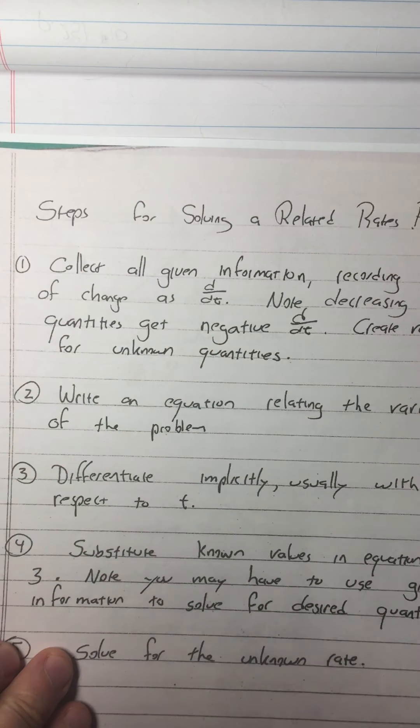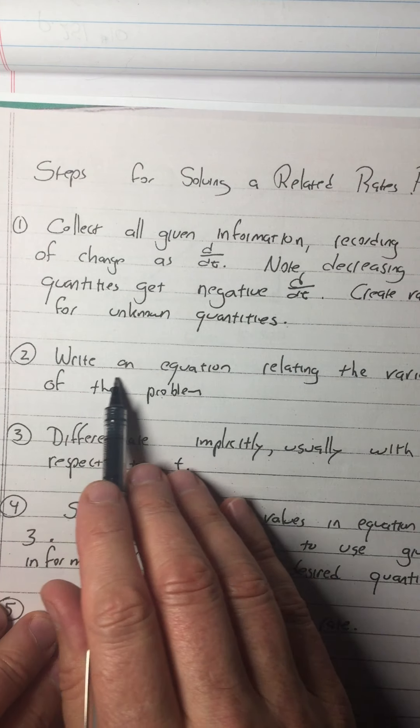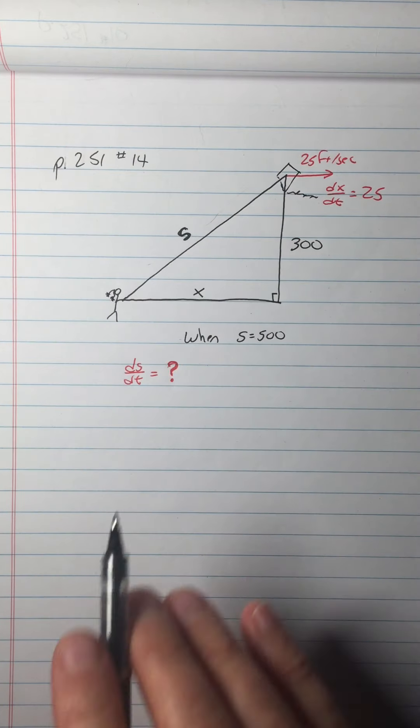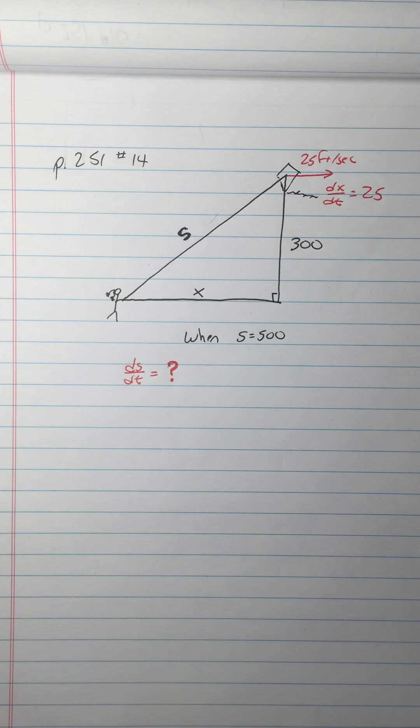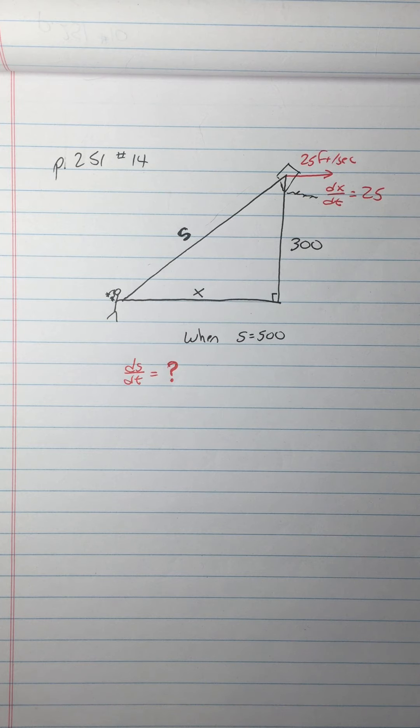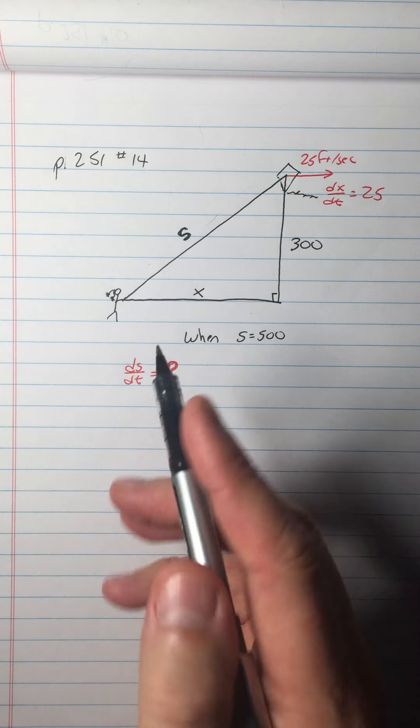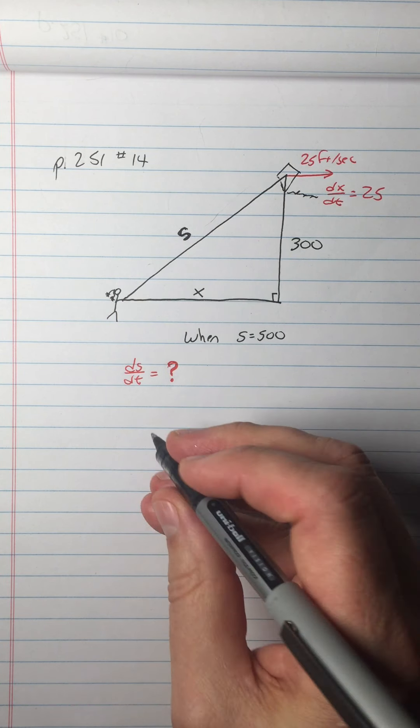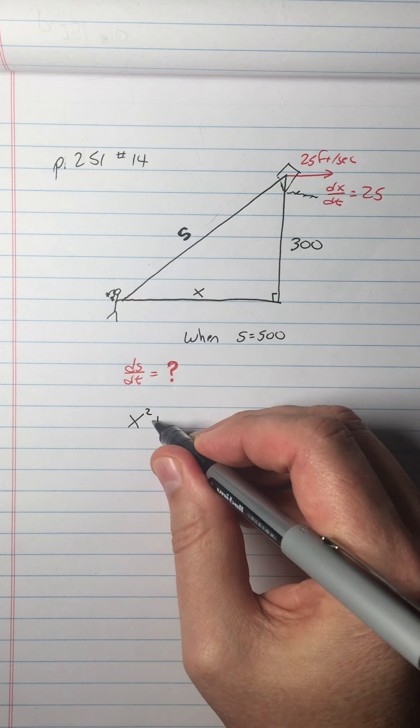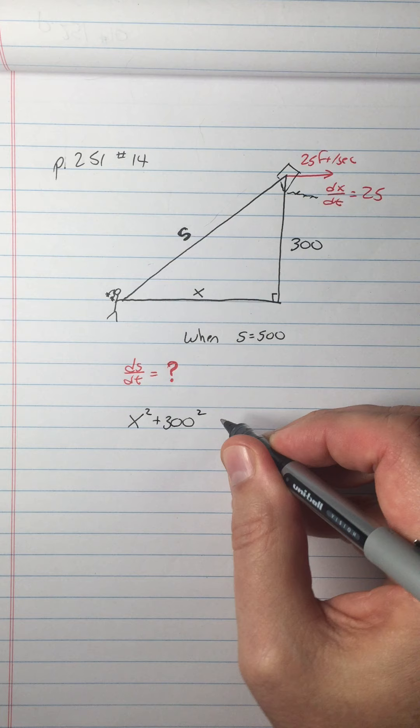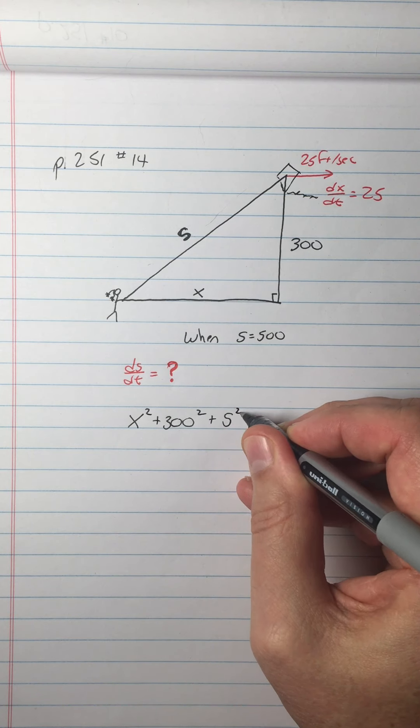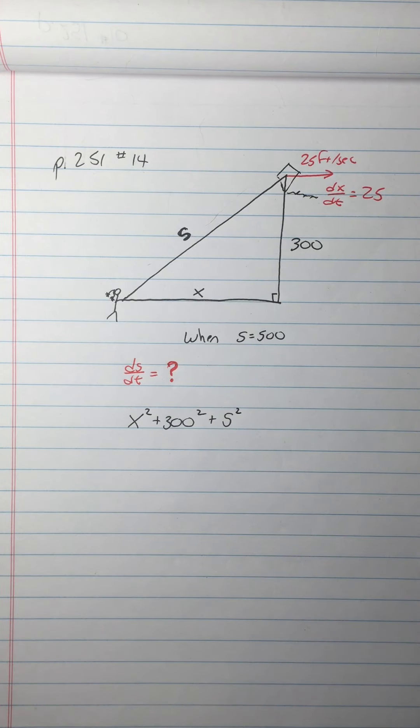And now we'll start solving the problem. So what do I need next? I've actually completed collecting all the given information. Now I'm in step two, write an equation relating the variables of the problem. Well, what is an equation that relates the variables of the problem? Take a moment to think about that. Okay, so if you've had a chance to think about it, the equation that relates them is Pythagorean theorem. And you're going to need to be able to spot that for test questions.